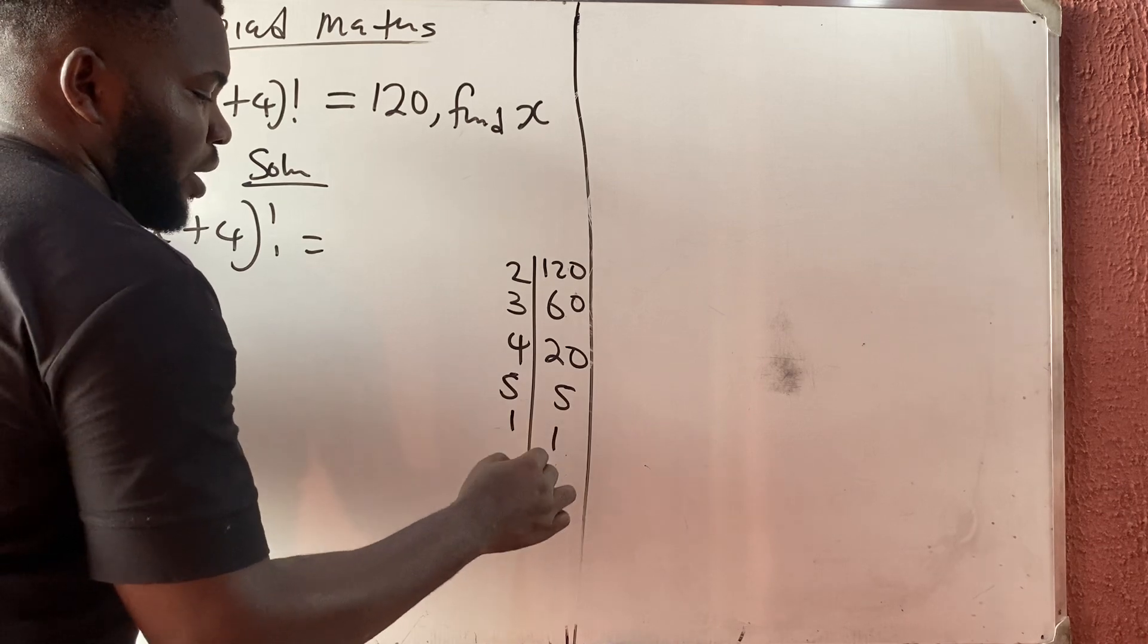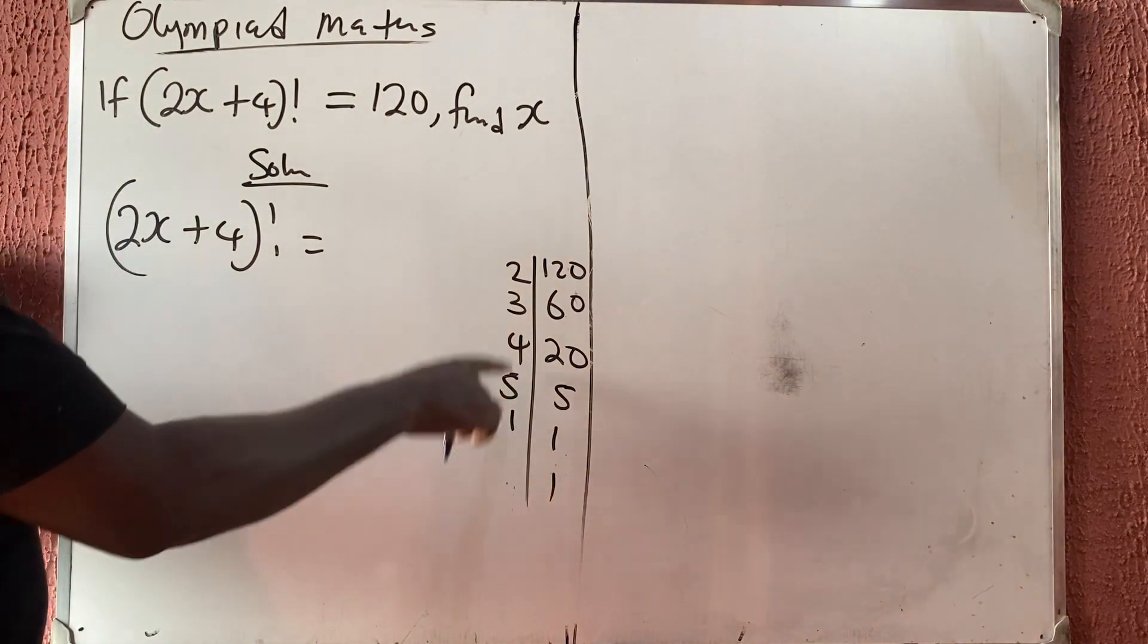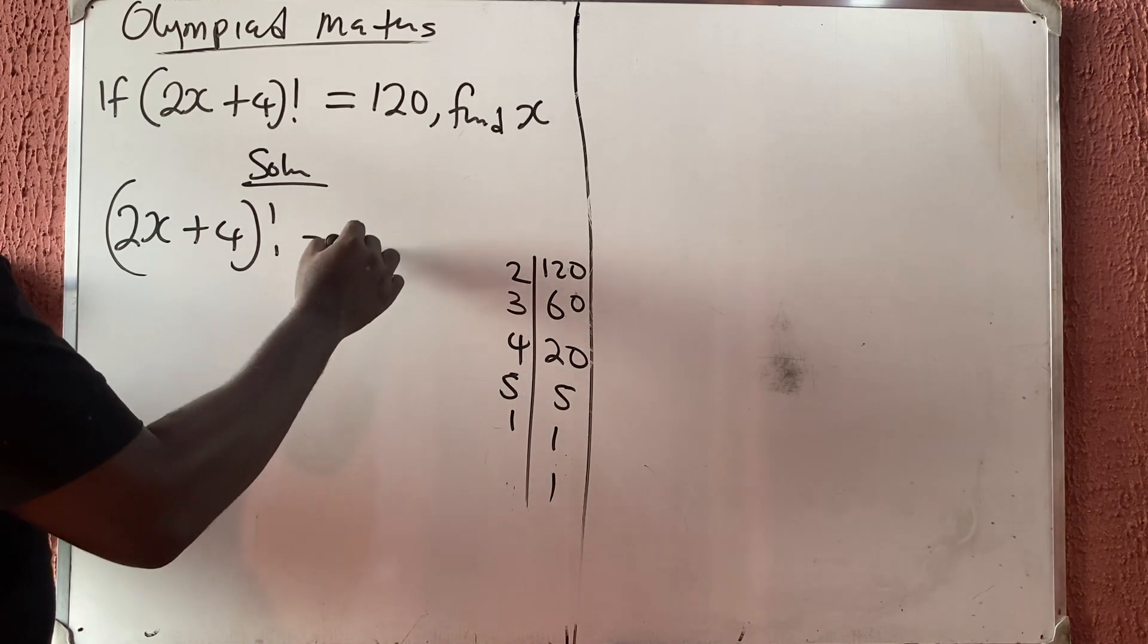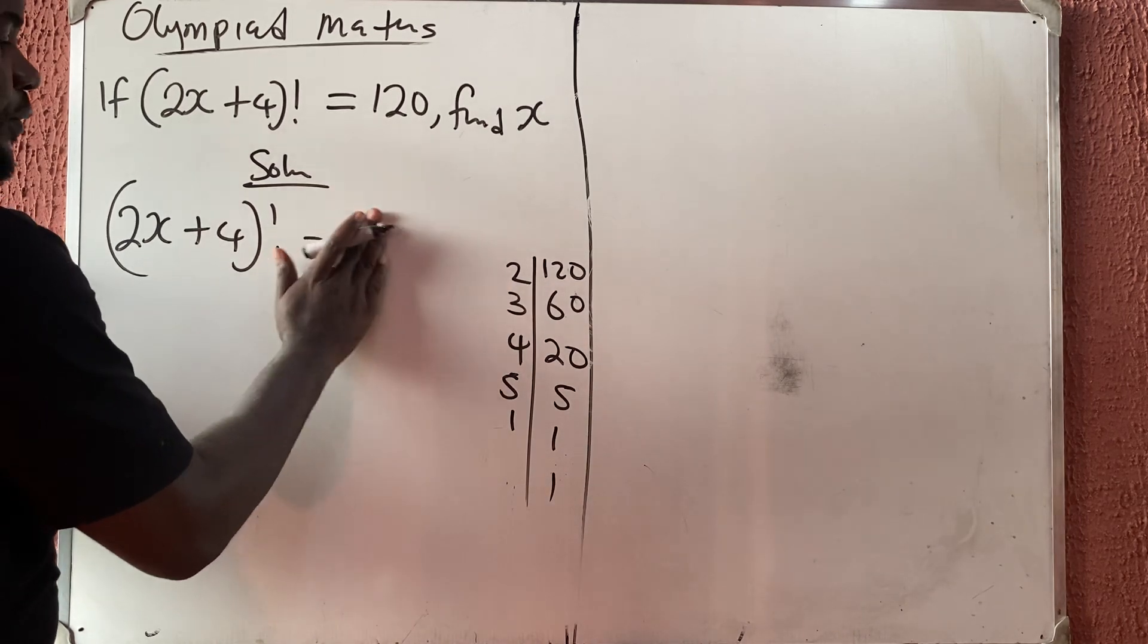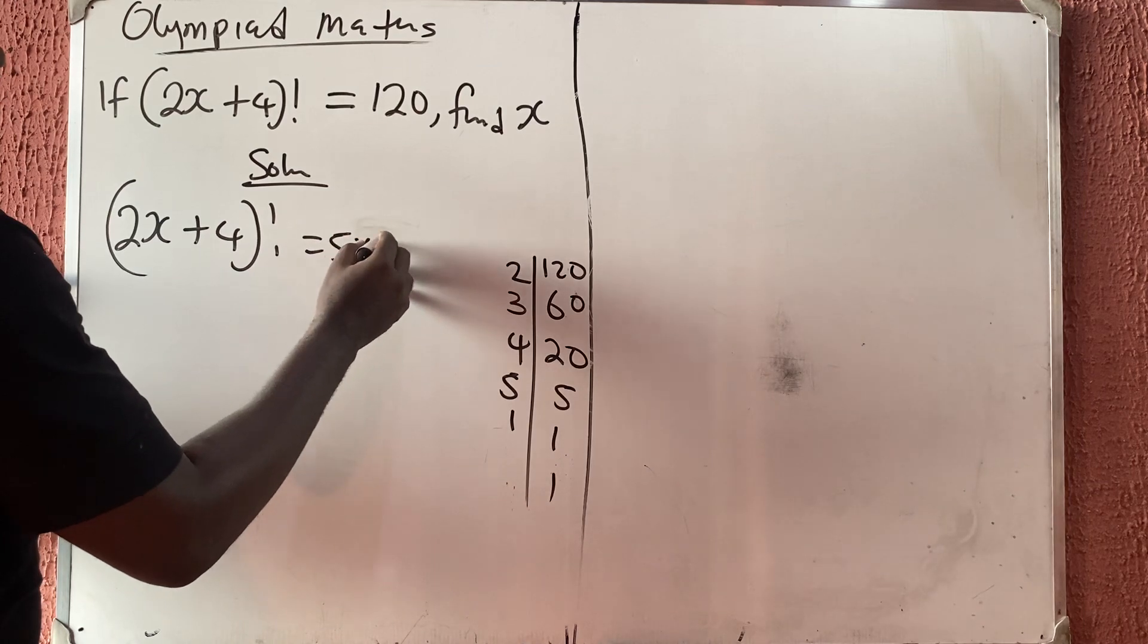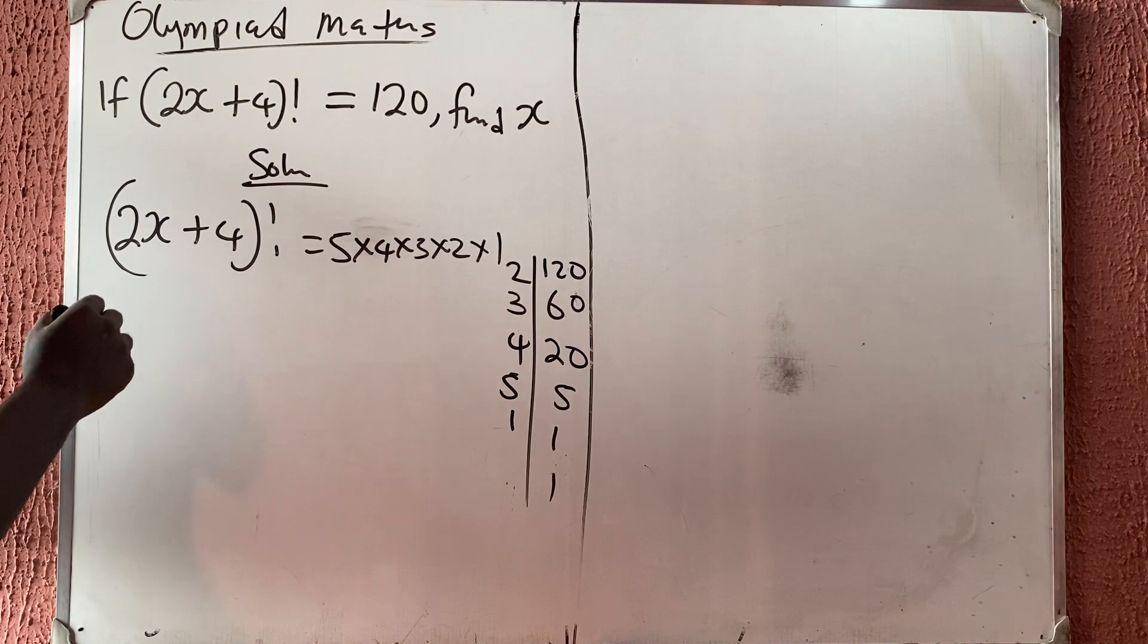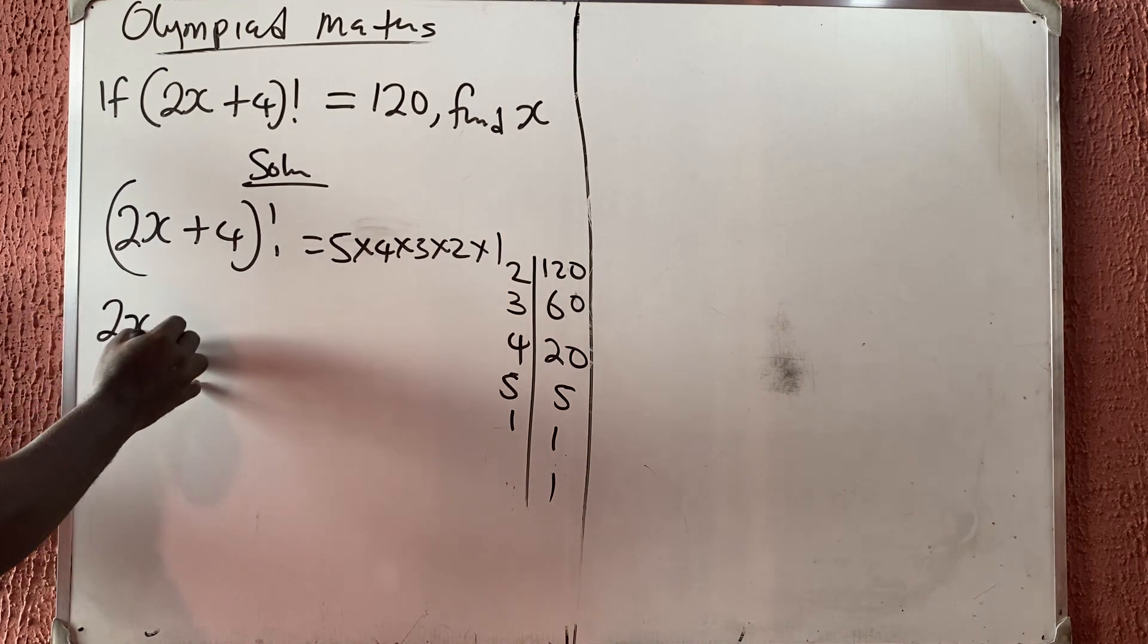5 by 120, I'm going to have 24. So you see that 120 is 1 times 2 times 3 times 4 times 5. Let me start from 5: it's 5 times 4 times 3 times 2 times 1.